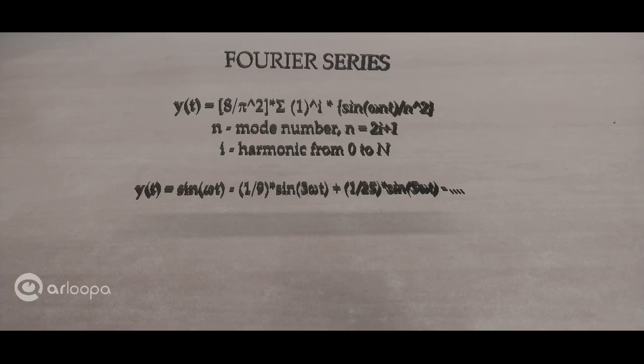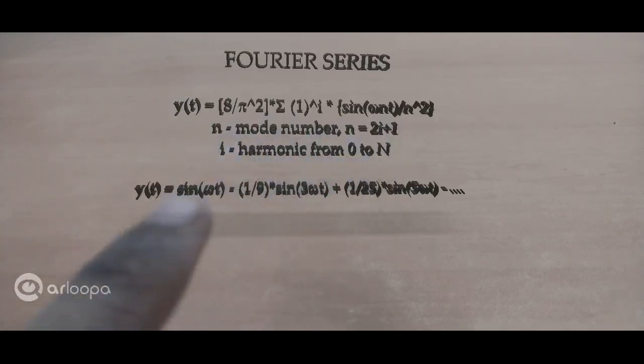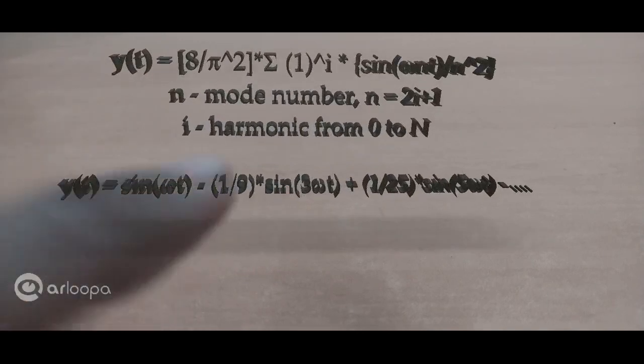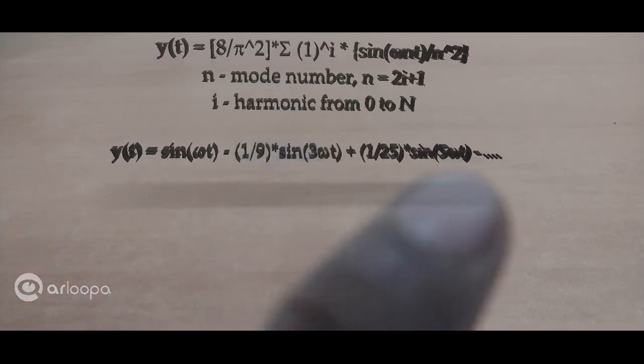Alright, here's a Fourier expression for the additive synthesis. So this is the main equation, and on plugging in the value, the range from 0 to n, you end up getting this equation. So that's sin(ωt) minus 1/9 sin(3ωt) plus 1/25 sin(5ωt), and so on.